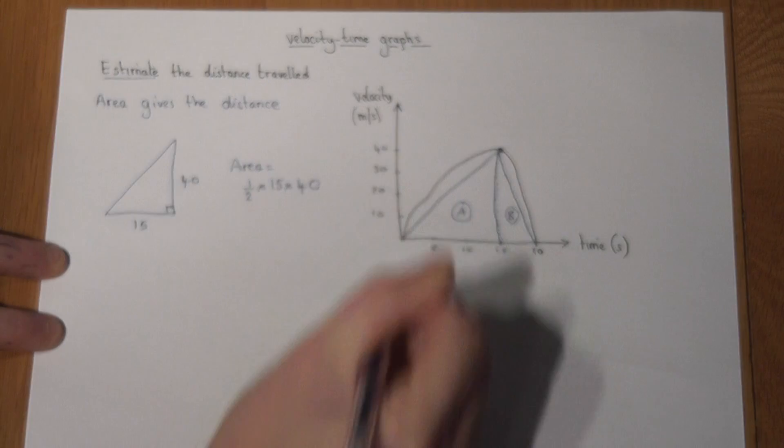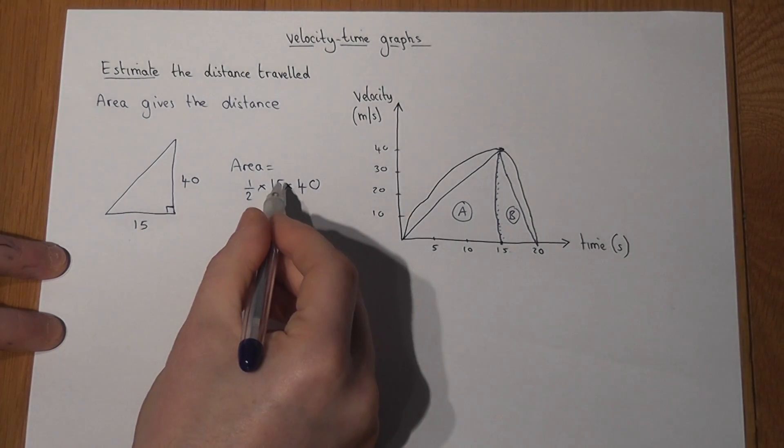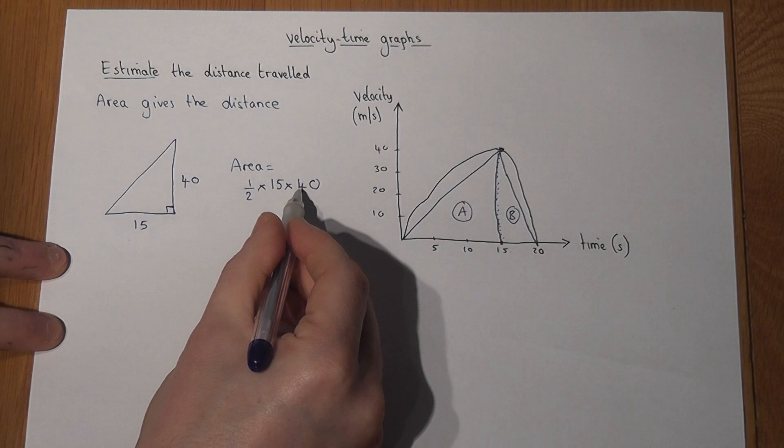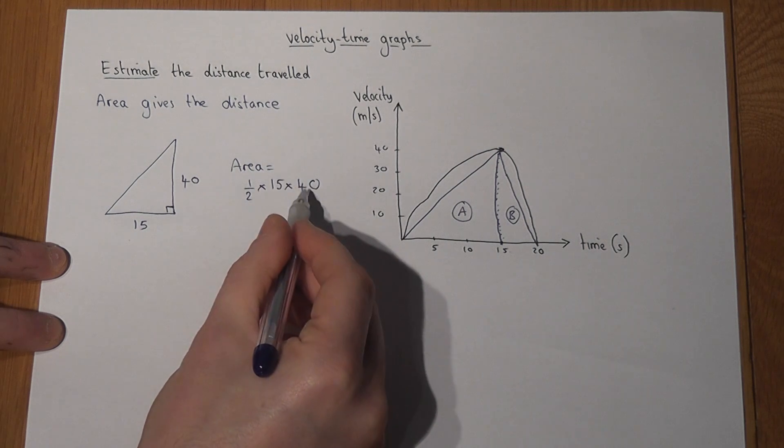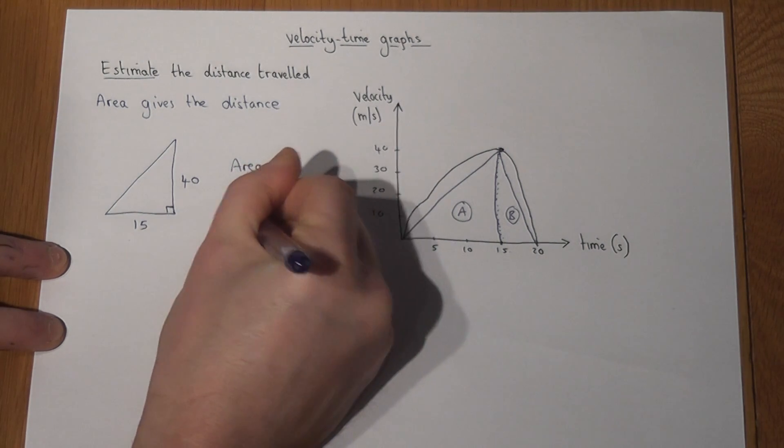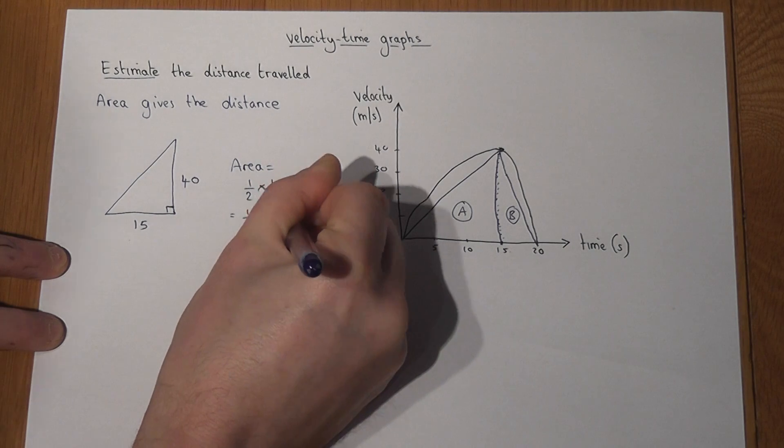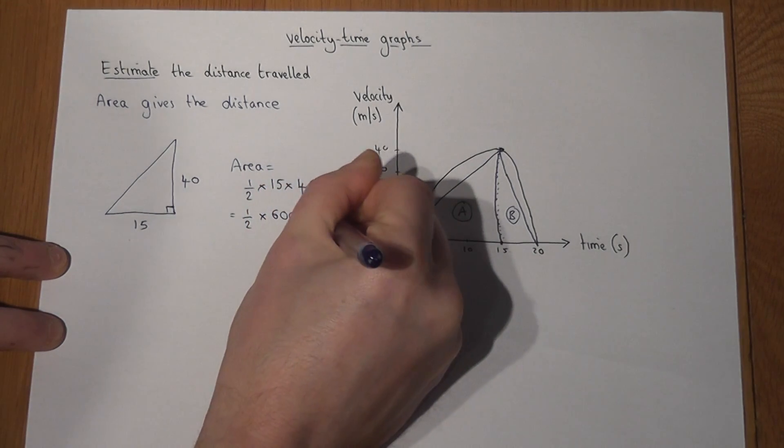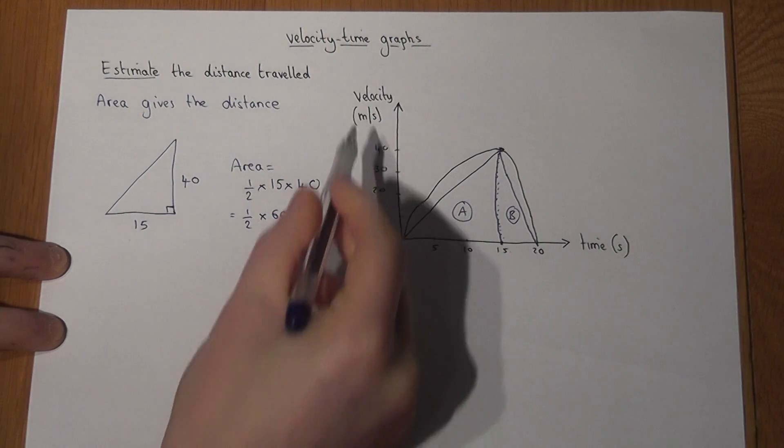15 times 4 is 60, so 15 times 40 is 600, so it's a half of 600 which is 300, and the units are metres.